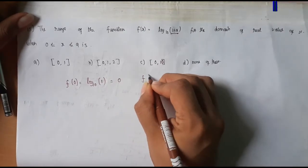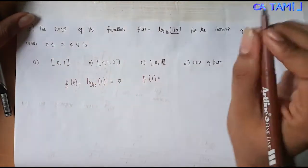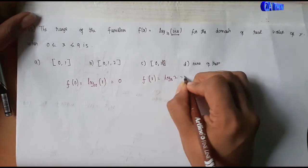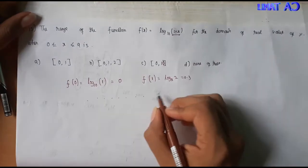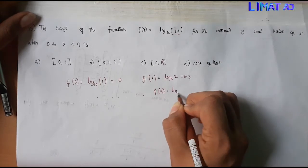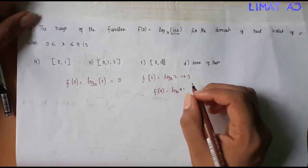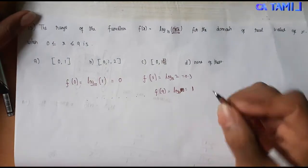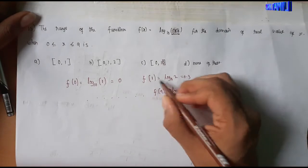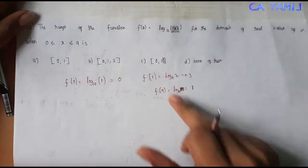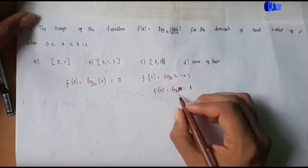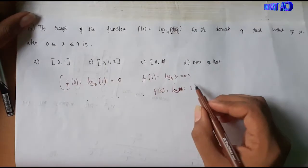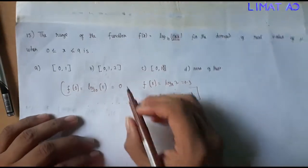Next, f of 1: log base 10 of (1+1) = log 2, value is 0.3. Finally, f of 9: log base 10 of (1+9) = log 10, value is 1. So 1 plus 1 is 2, log 2 is approximately 0.3. And 9 plus 1 is 10, log base 10 of 10 is 1. Starting from x=0 we get 0, and x=9 gives 1. So range is 0 to 1.